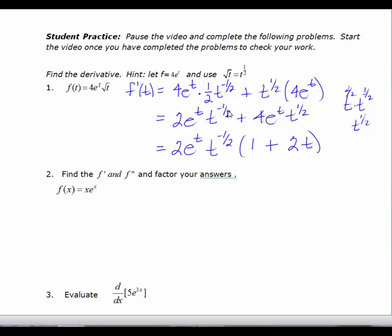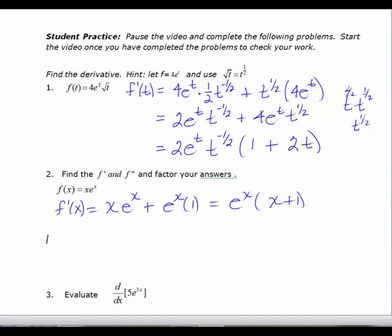Let's look at the second problem. We have to find the first derivative using the product rule. First times derivative of the second: the first is x, and the derivative of e to the x is e to the x. Plus the second times the derivative of the first, which is 1. So I can rewrite this as e to the x. If I factor out an e to the x, I get x plus 1. That's my first derivative.